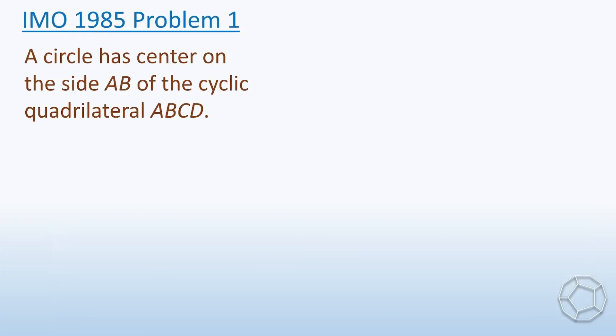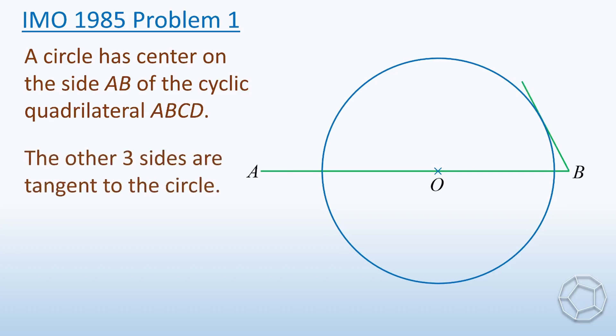A circle has center on the side AB of the cyclic quadrilateral ABCD. The other three sides are tangent to the circle. Prove that AD plus BC equals AB. In the following discussion, we only need the upper semicircle.